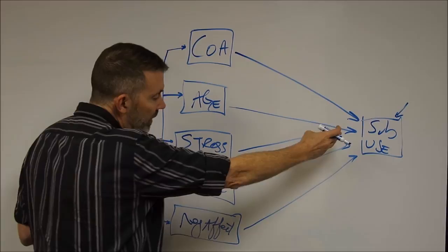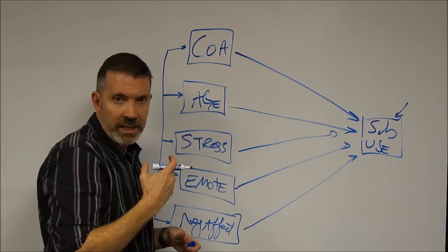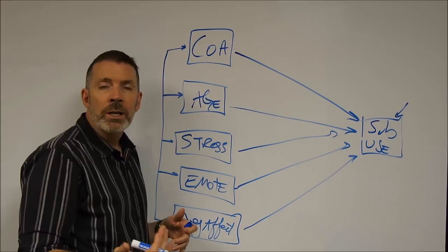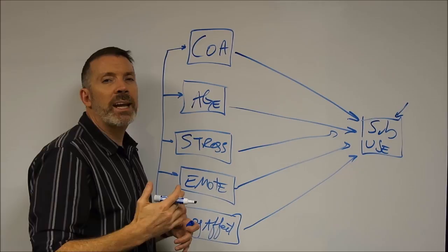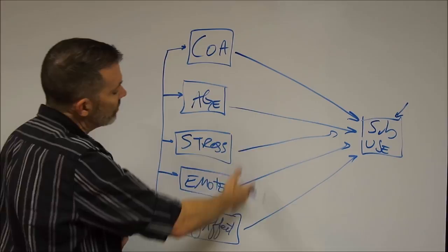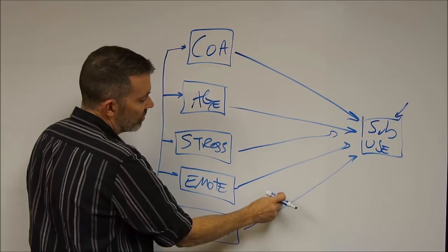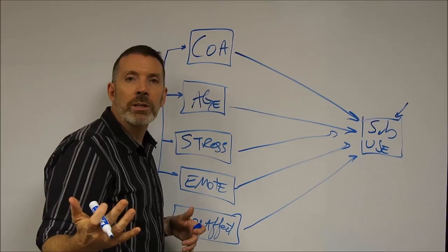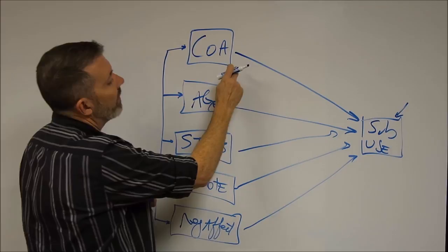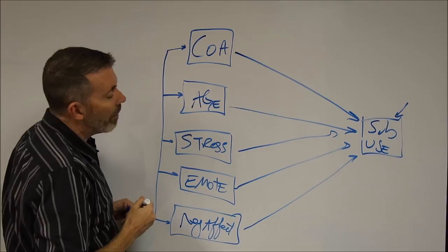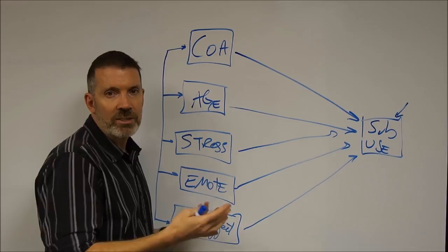We have two measures of association of the predictors with the outcome. The first is the optimal linear combination of our set of predictors in the prediction of our dependent variable, often captured in the multiple R-squared. You might see in a journal article where they say the set of predictors accounted for 22% of the variance in the dependent variable. But we also have unique predictability — each regression coefficient is the effect of each predictor above and beyond all other predictors. So we can look at the effect of COA controlling for age, stress, emotion, and negative affect. This is a standard multiple regression, and it is also a form of path analysis that has five predictors and one outcome.